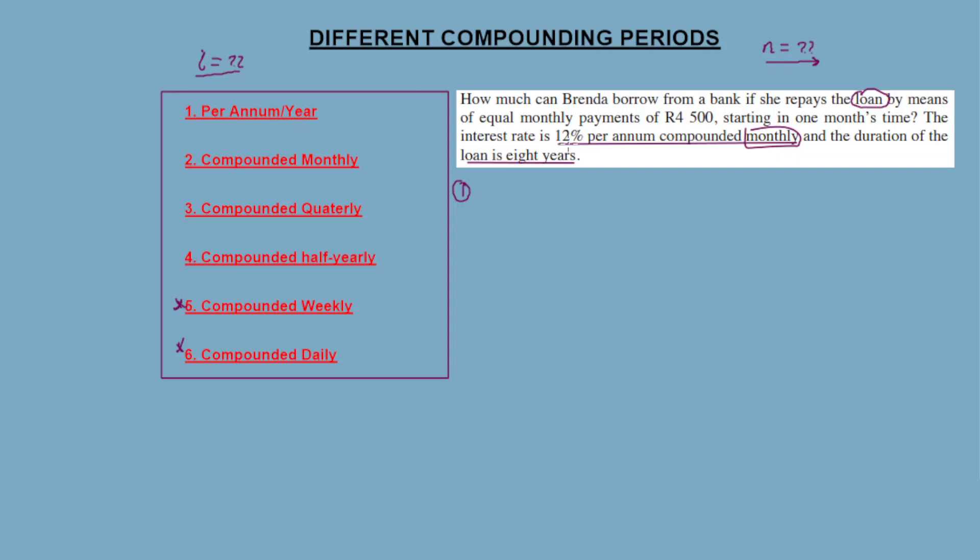For number one, per annum, if the question says 12% per annum compounded yearly, what is our value for n? The value for n is the same as the number of years. The duration of the loan is 8 years, so n equals 8. It's obvious that it's 8 years, you multiply by 1.